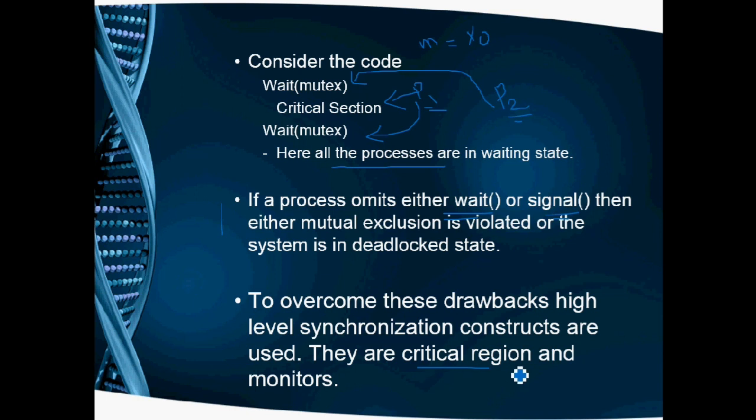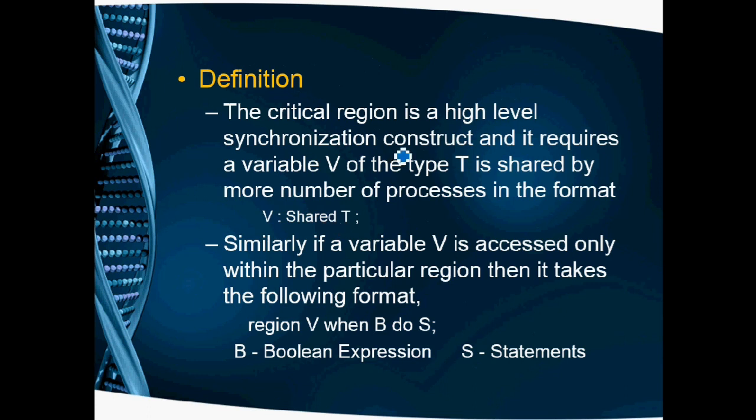Now we will see what is the critical region. The critical region is a high-level synchronization construct. It requires a variable V of the type T that is shared by more number of processes. If a variable V is accessed only within a particular region, then it takes the following format: region V when B do S.